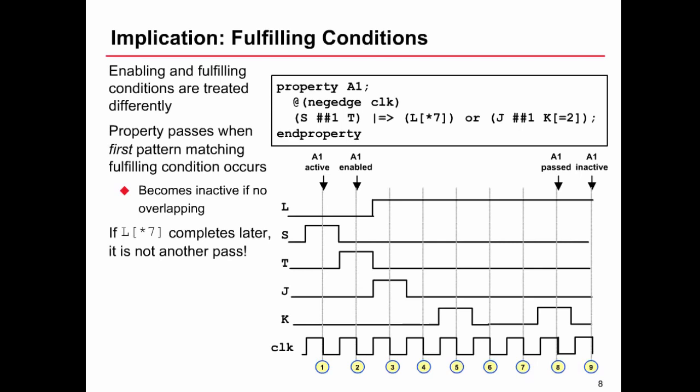So a property will pass whenever the first and shortest pattern matching the fulfilling condition is observed. And then it becomes inactive because it's come to a conclusion, which is pass or fail. Given these waveforms here then, so on cycle two is when our enabling sequence s followed by t is completed. From the next cycle, we require either l consecutively seven times or we require j followed by two non consecutive occurrences of k. So on cycle three, we have l being true and j being true as well.